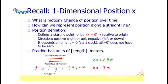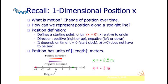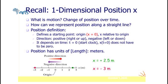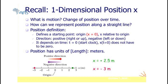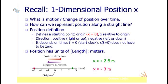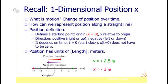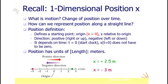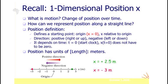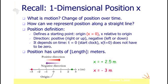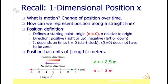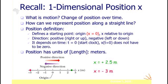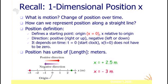Let's start our discussion by recalling dimensional position for translational motion. Motion is a change of position over time. As you can see on the screen, the origin defines the starting point. To have a positive direction, your position should be on the right side, and to have a negative position you locate on the left side. There is a continuous change of position over time, and position has a unit of length which is meters.